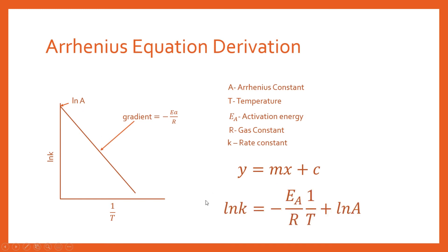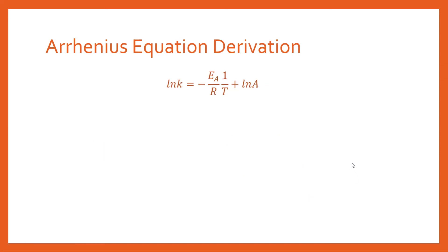If we just substitute all of those things in, we get this expression here. And we can manipulate this expression to get the famous normal form of the Arrhenius equation.